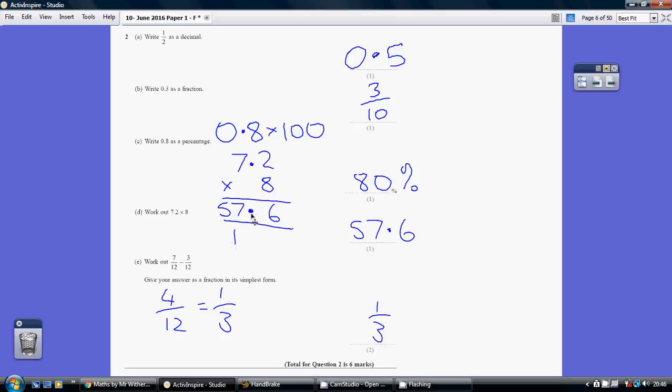And the decimal point needs to be here, because when you think about it, just 7 on its own times 8 would be 56. So the answer's got to be about 56, so the decimal point goes here.